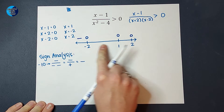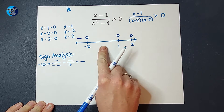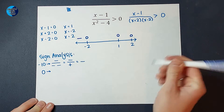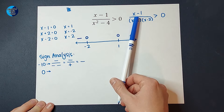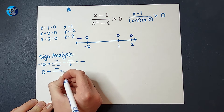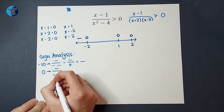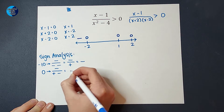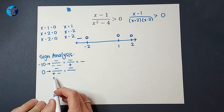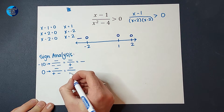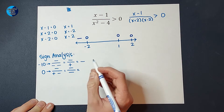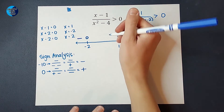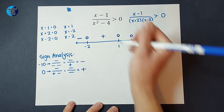Between negative two and one, I need to pick a number — let's pick zero. If I plug in zero, I get zero minus one, which is negative on top. Zero plus two would be positive and zero minus two would be negative. So on top I have a negative; on bottom I have a positive times a negative, which is negative. And a negative divided by a negative is positive. So this section is positive.